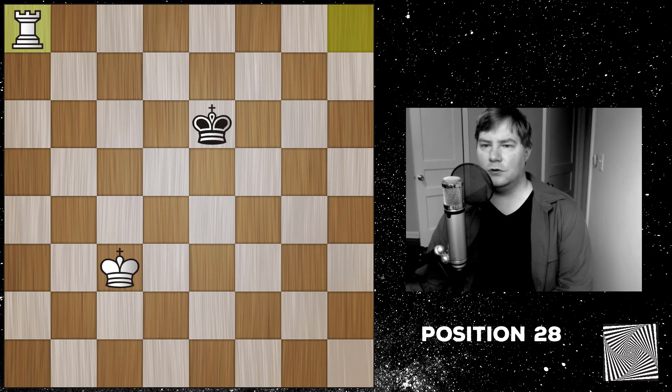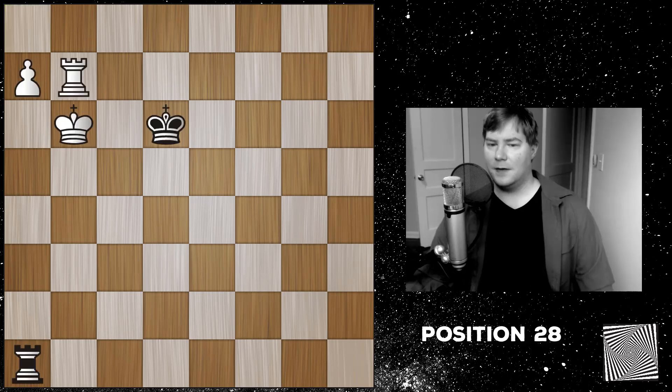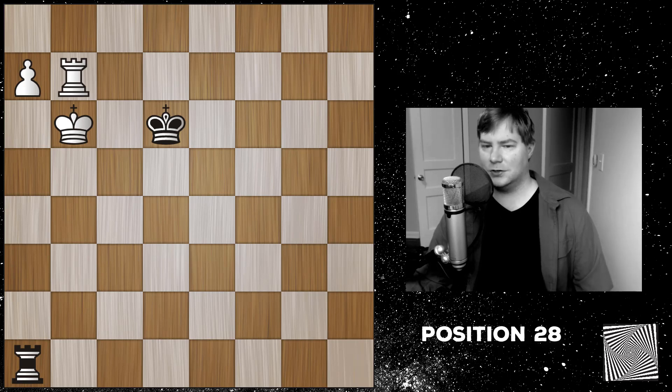Alright, so let's move to the black side. If you want to pause it and try to evaluate it for yourself, I'd encourage you to do that. But basically, if it's black to move, then it's actually a draw, but he has to know some specific things.